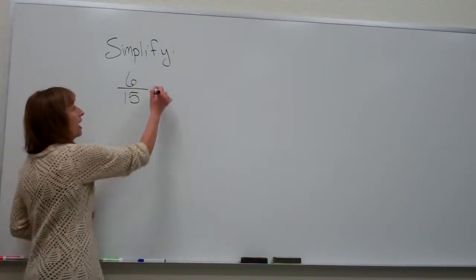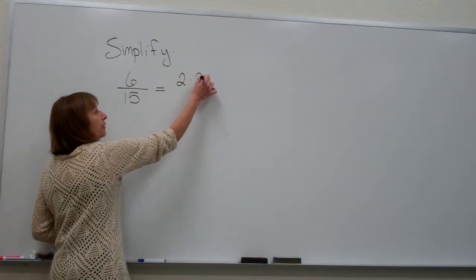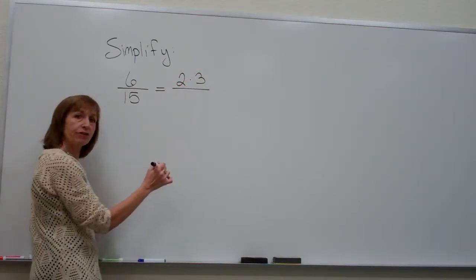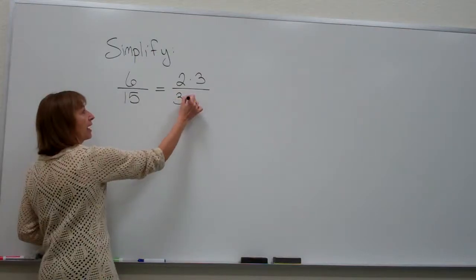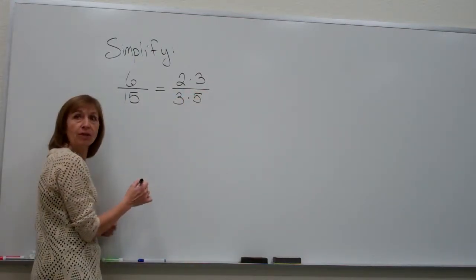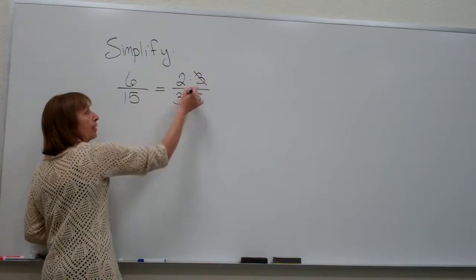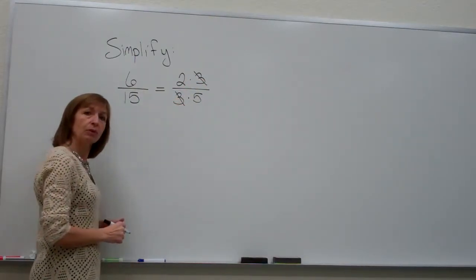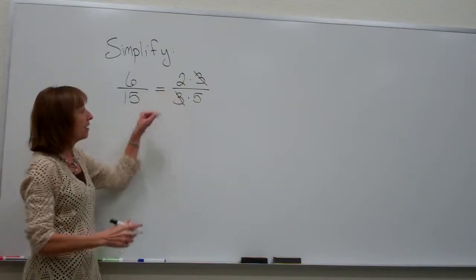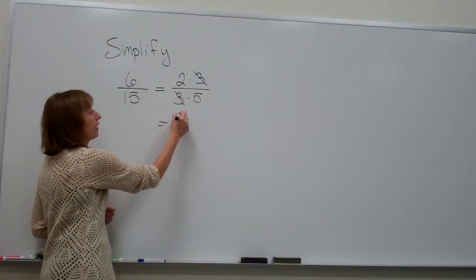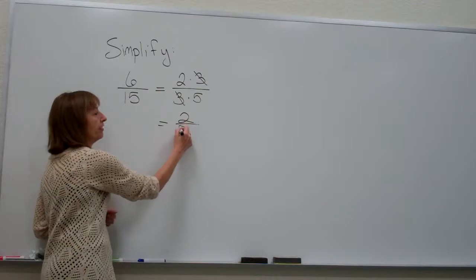So here, I can factor my 6 as 2 times 3, and we can factor 15 as 3 times 5. We notice we have a common factor of 3 in the numerator and denominator, so we can remove that common factor pair, and our final simplified fraction's value is 2/5.